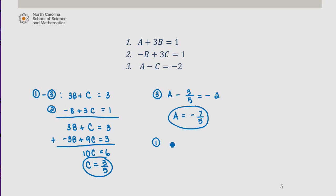Using then equation 1, we find that negative 7 fifths plus 3B equals 1, so 3B is equal to 12 fifths, which then means that B is equal to 4 fifths.